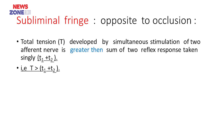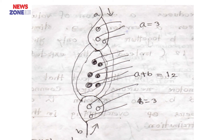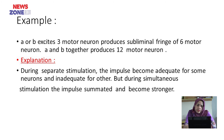What is the subliminal fringe? It is opposite to occlusion. The total tension developed by simultaneous stimulation of two afferent nerves is greater than the sum of the two reflex responses produced singly — that is, total T is greater than T1 plus T2. The explanation is that during separate stimulation, the impulse becomes adequate for some neurons and inadequate for others, but with simultaneous stimulation the impulse becomes summated and stronger.